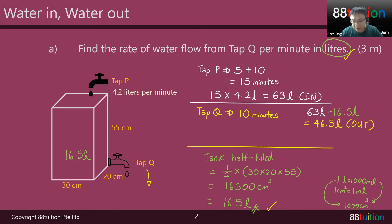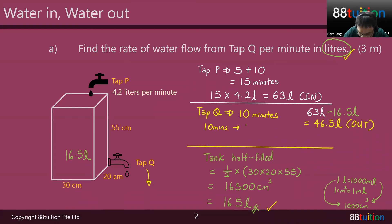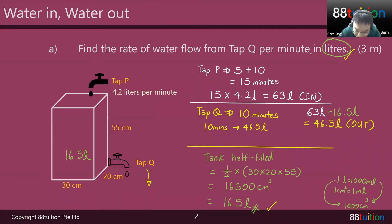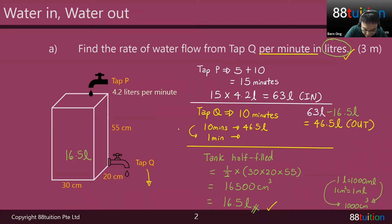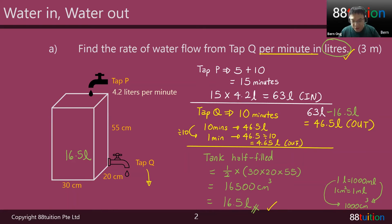So this 46.5 liters is flowing out thanks to tap Q, and it took tap Q 10 minutes to do so. In 10 minutes, 46.5 liters of water is flowing out. The question asks: find the rate of water flow from Q per minute. Per minute means in one minute — so from 10 minutes I divide by 10. To be fair, 46.5 also divides by 10. So every one minute, 4.65 liters is flowing out from Q.